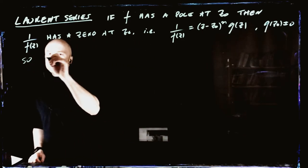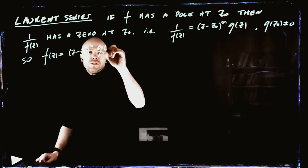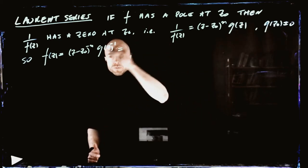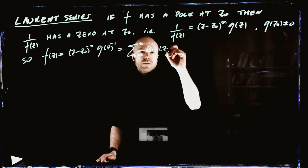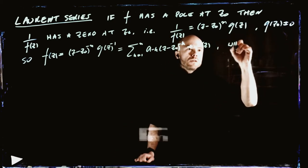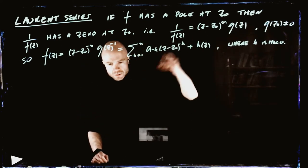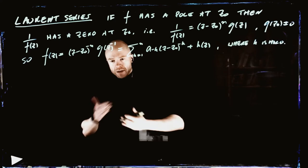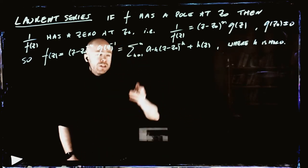And then we unwrap that and get f(z) equals (z minus z₀)^{-n} times g(z)^{-1}. Since g is a nice holomorphic function which is non-zero, we can expand it, and we find that it has some expansion like this: sum from k equals 1 up to n of a_{-k}(z - z₀)^{-k}, and then some holomorphic function h.